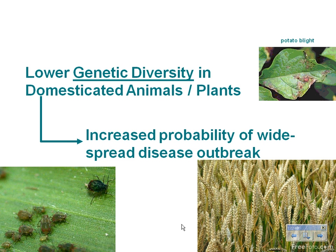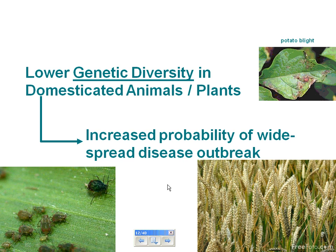With a genetically uniform crop, we increase the probability of widespread disease. An example is the Great Potato Famine caused by potato blight. In the United States, Russian aphids targeted our wheat when we had the same wheat crop everywhere. So lowering genetic diversity increases the likelihood of disease spread.